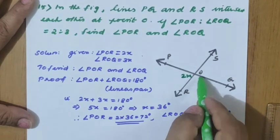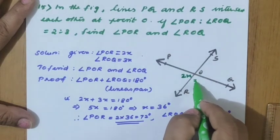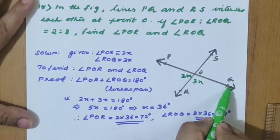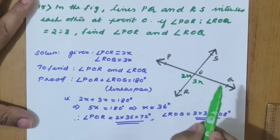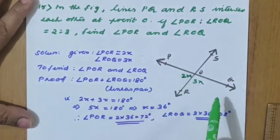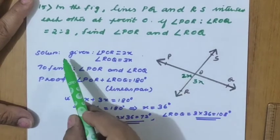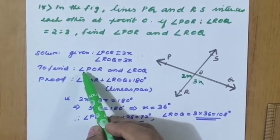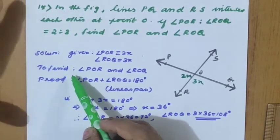ROQ equals 3x. Since PQ is a straight line, we use the linear pair formula: 2x plus 3x equals 180 degrees. This is a 3-mark question, so we should write all steps — given, to find, and proof.